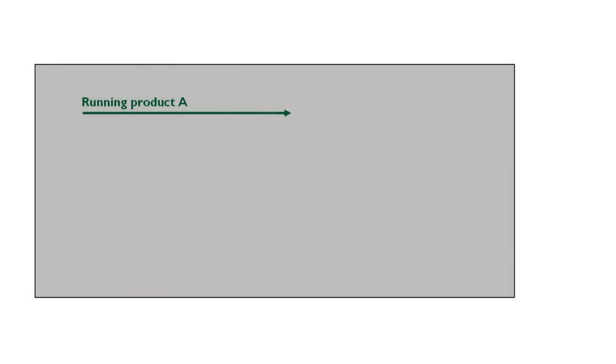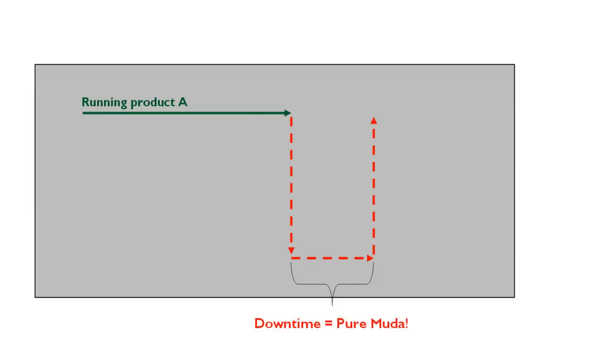To make sure we have a good grasp of this definition, let's look at a simple example. First, let's assume we're running product A. Let's also assume we come to the end and we've successfully produced product A and the machine stops running. Since the operator knows they must now get prepared to run product B, they begin the changeover process, which might include gathering the needed parts, tools, drawings, paperwork, and work instructions. All of this results in machine downtime, which is pure Muda, or waste, since no value is being created for the end customer.